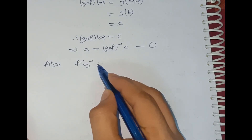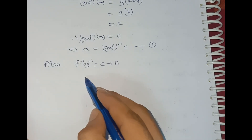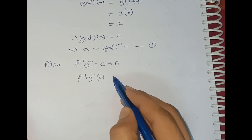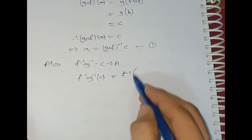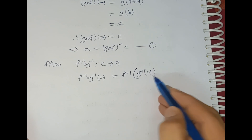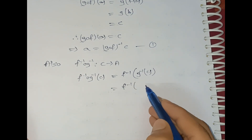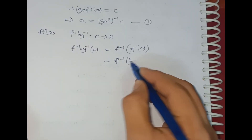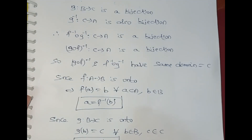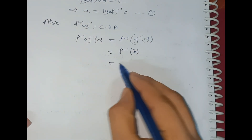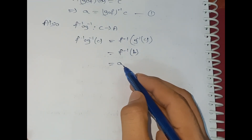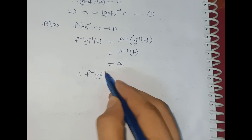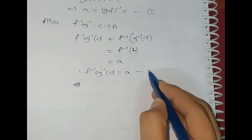Also, f⁻¹∘g⁻¹ mapping C to A: (f⁻¹∘g⁻¹)(c) = f⁻¹(g⁻¹(c)). Since g⁻¹(c) = b, this becomes f⁻¹(b), and since f⁻¹(b) = a, we get (f⁻¹∘g⁻¹)(c) = a. This is Equation 2.